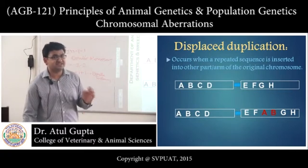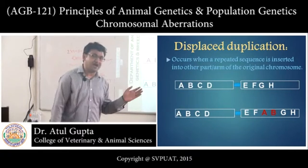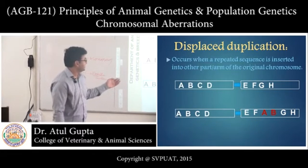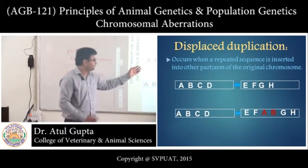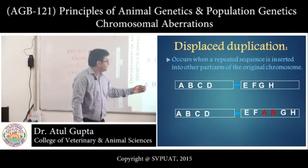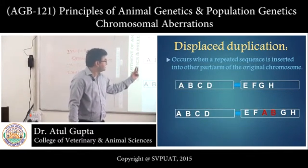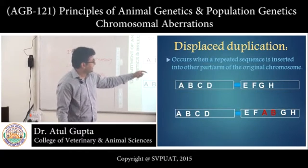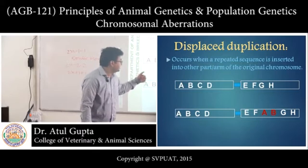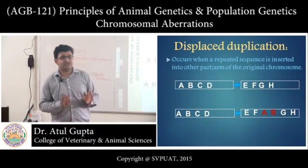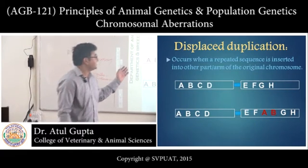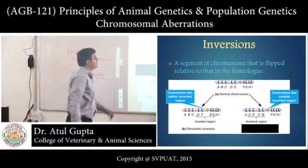In displaced duplication, a repeated sequence is inserted into another part or arm of the original chromosome, not adjacent to the original sequence. For example, the AB portion is duplicated but inserted at some other location away from the original AB sequence. This is displaced duplication.